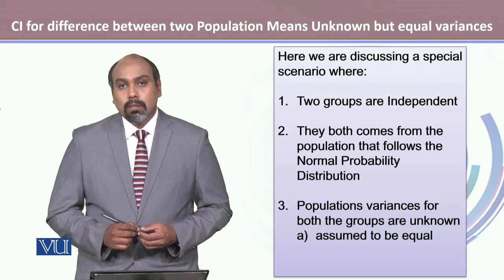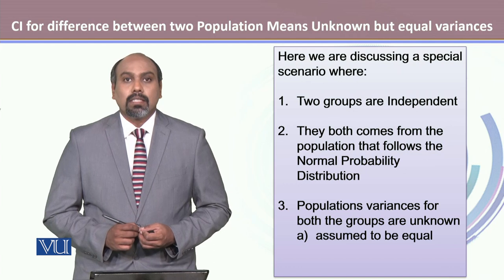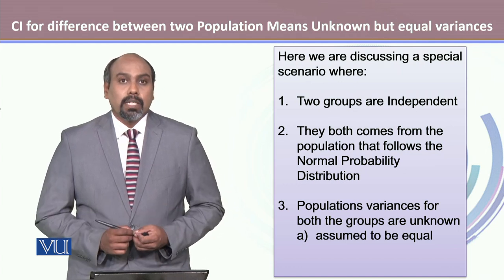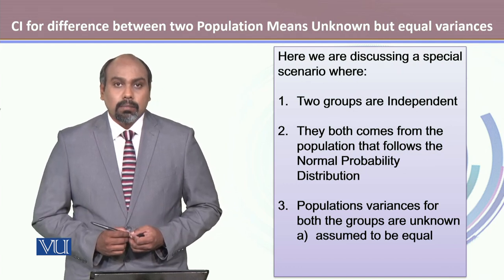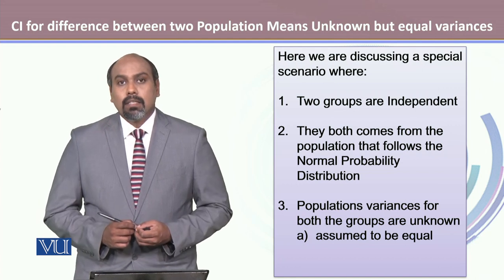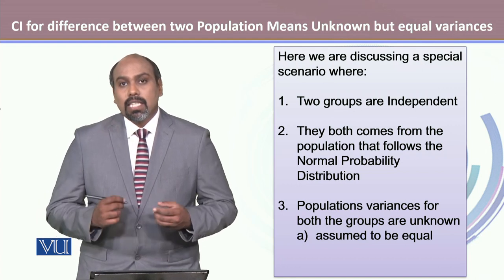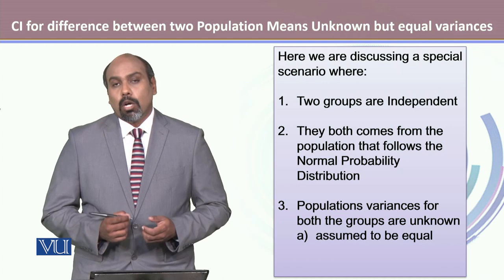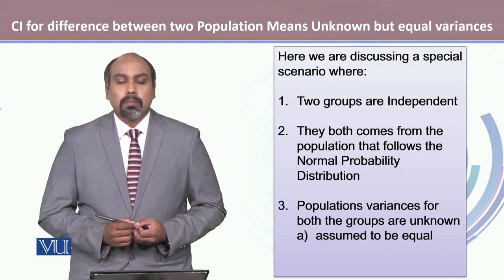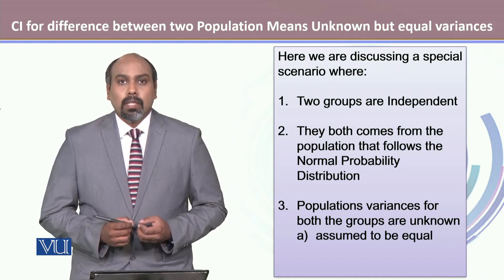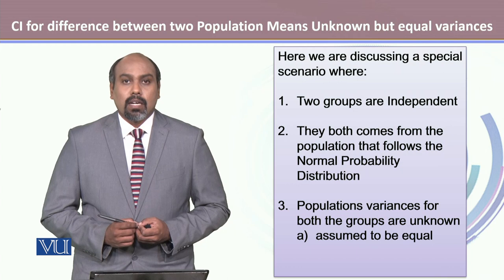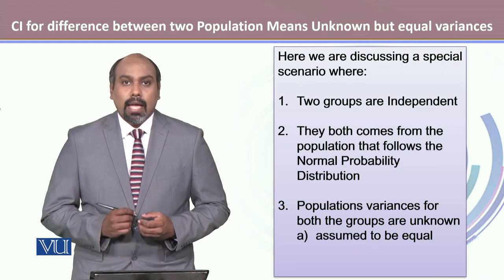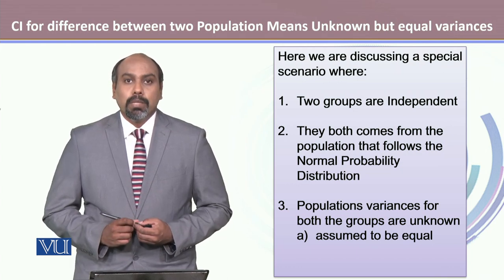In this module we're talking about the special case where our two groups are independent and both samples come from a population that follows the normal probability distribution, and the population variances are unknown and are assumed to be equal.